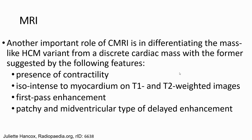Another important role of cardiac MRI is in differentiating the mass-like hypertrophic cardiomyopathy variant from a discrete cardiac mass. Features suggesting HCM include contractility isointense to myocardium on T1 and T2 weighted images, first-pass perfusion with patchy enhancement, and patchy mid-ventricular type of delayed enhancement.